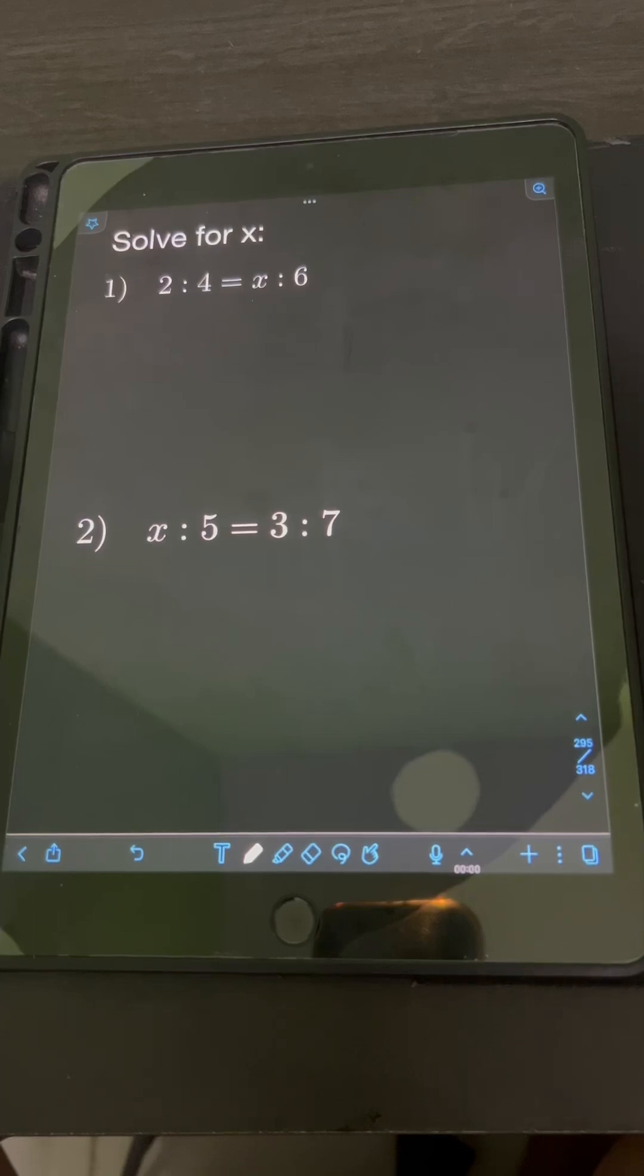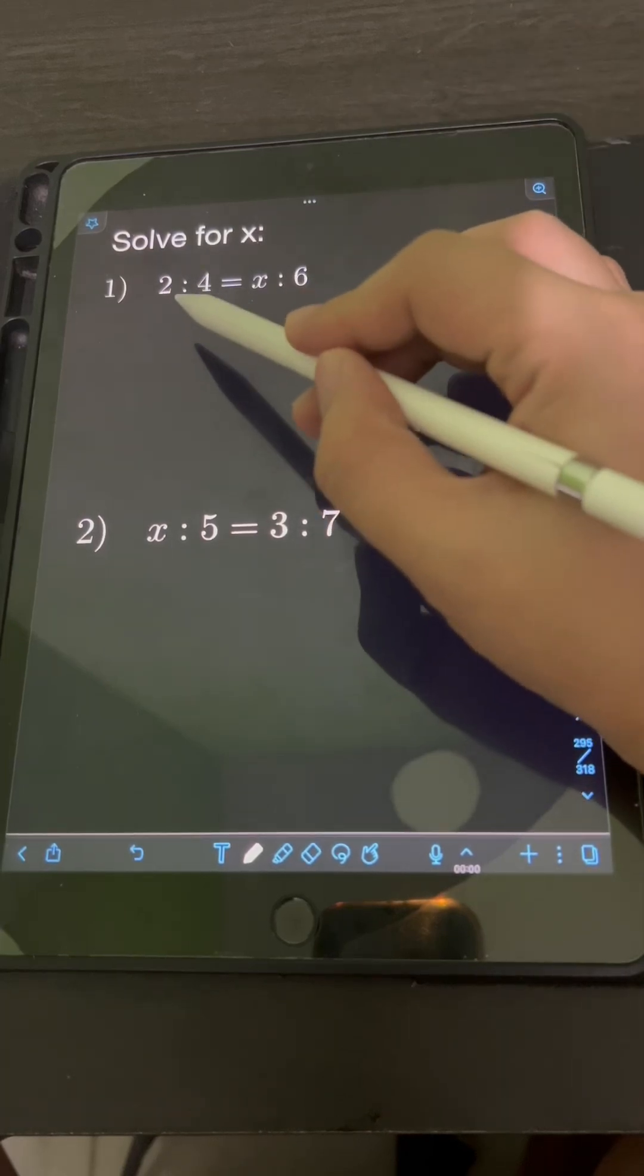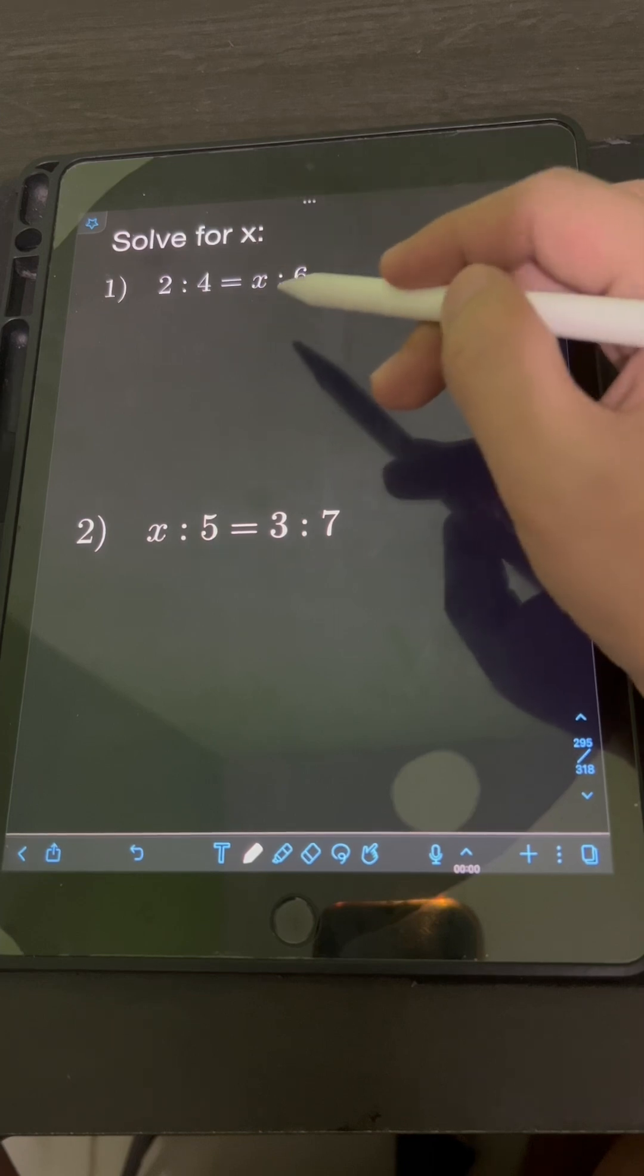Let's try to solve these problems. Solve for x, so let's start with 1. 2 is to 4 is equal to x is to 6.